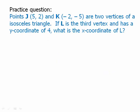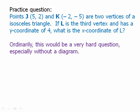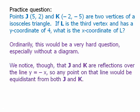Here's a practice question — pause the video and then we'll talk about it. This would be an example of a very hard question on the test, especially without a diagram. We notice that points J and K are reflections over the line y = −x, because we switch the x and y-coordinates and make the two positives negative: (5, 2) and (−2, −5). So any point on the line y = −x is equidistant from them. We need a point on y = −x with a y-coordinate of 4, which means x = −4. So the x-coordinate of point L is −4.